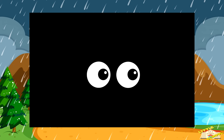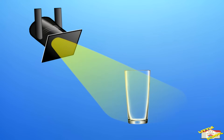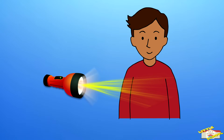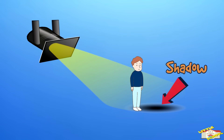Without light it would be completely dark and we wouldn't be able to see anything. How do shadows happen? When light hits an object, it usually passes through some things like glass, but it can't go through solid things like your body. When light is blocked by something solid, it creates a shadow behind that object. A shadow is just a dark area where the light couldn't reach.